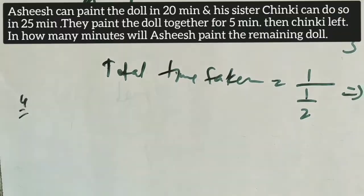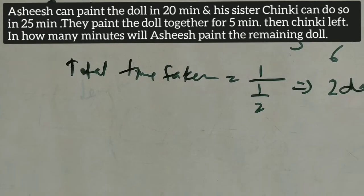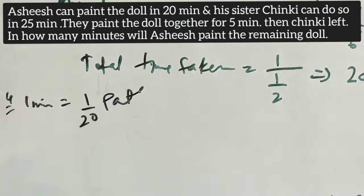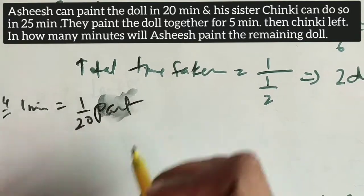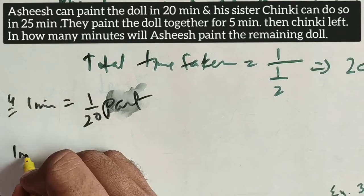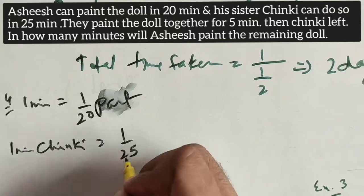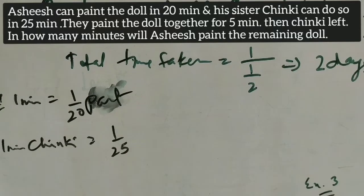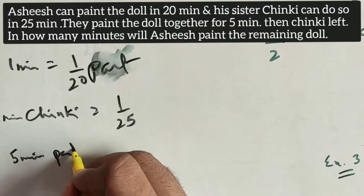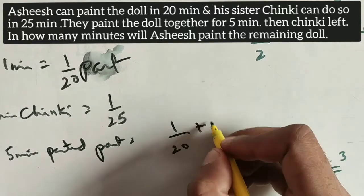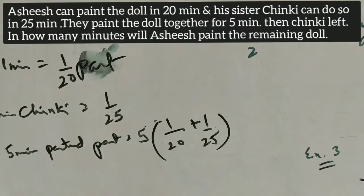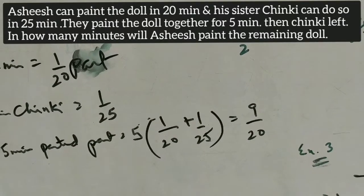Example 4: Ashish can paint the doll in 20 minutes, so in 1 minute he paints 1/20th of the work. His sister Chinky can do the same in 25 minutes, so Chinky's 1-minute work is 1/25. They paint the doll together for 5 minutes. Their combined per-minute work multiplied by 5 gives 9/20th of the work painted.